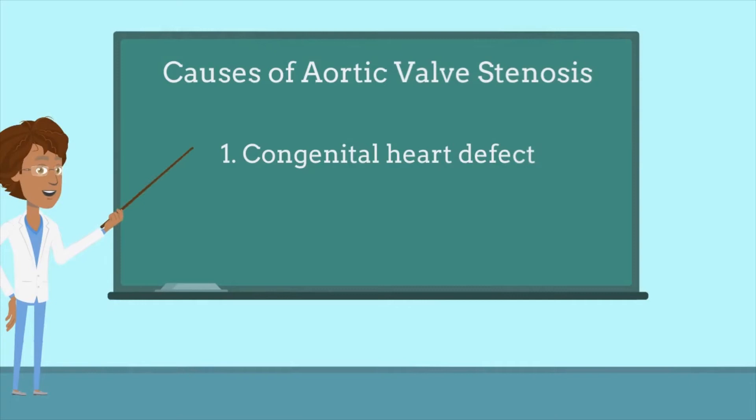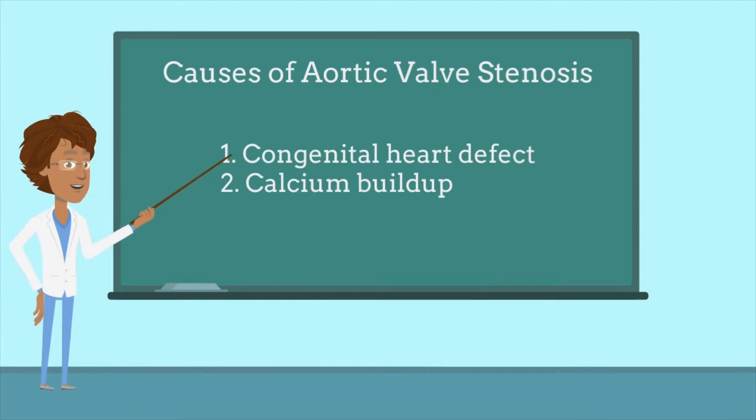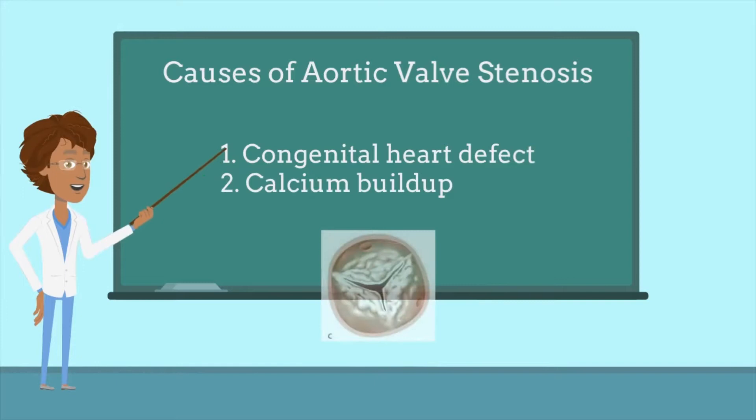There are three main causes of aortic valve stenosis. One of the causes is congenital heart defect. This is when the disease occurs after birth and involves a deformity of the aortic valve. This is the reason for your aortic valve stenosis.